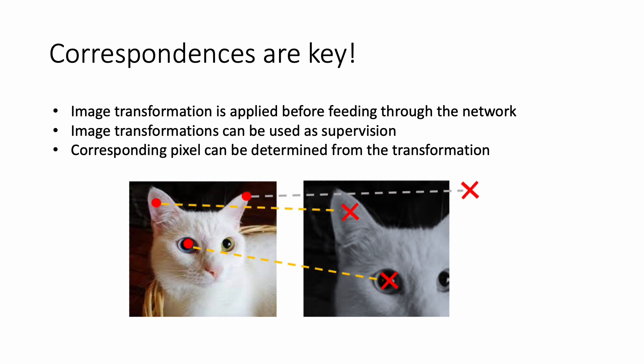We inferred that we can find the correspondence from the image transformation itself. For example, here we augment one image, and because the augmentation is done before training starts, we can get the corresponding pixel locations of the original image and the augmented image. Once we get the corresponding pixels between the two images, we can apply self-supervised loss between the features of those pixels.